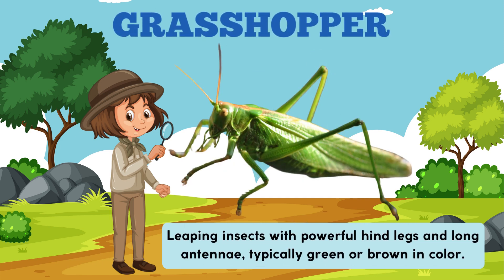Grasshopper. Leaping insects with powerful hind legs and long antennae, typically green or brown in colour.